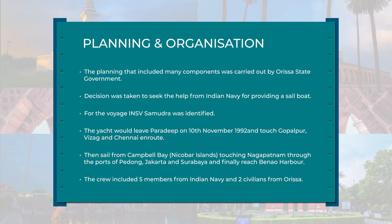The planning, which included many components, was carried out by the Orissa state government as the nodal agency. The decision was taken to seek help from the Indian Navy, because they were planning to revive the actual voyage — traveling from Orissa to Bali. The Navy helped by providing a sailboat, specifically the INSV Samudra for the voyage. This yacht would sail from Paradip on 10th November 1992 and touch Gopalpur, Varzak and Chennai en route in India, then move to the Nicobar Islands, sail to Campbell, touching Nagapatnam through the ports of Pedong, Jakarta, Suryabaya, and finally reach Borneo Harbour at Bali.